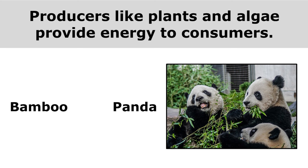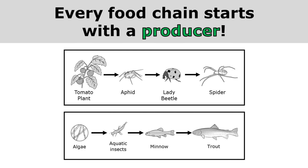Producers, like plants and algae, provide energy to consumers. Here the pandas are eating the bamboo, so energy goes from the bamboo to the panda. Every food chain starts with a producer — that could be a plant or algae — but there will always be a producer at the beginning of a food chain or food web.